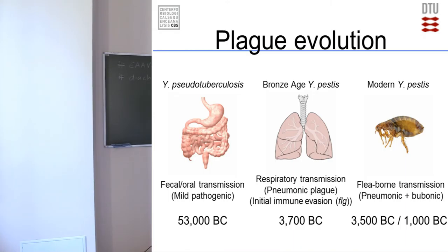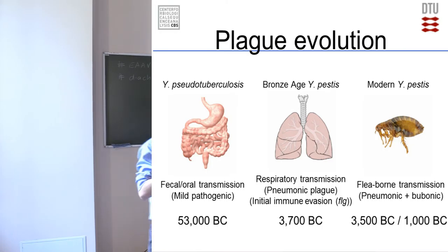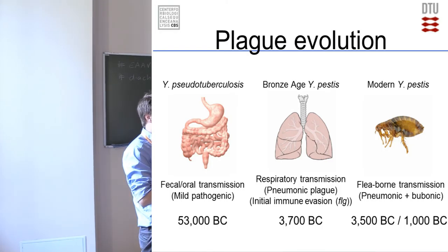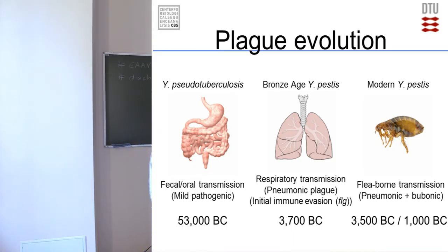Around 3,500 years ago, strains appear that actually contain the YMT gene, meaning plague starts to build up the capability to be transmitted by fleas. Around 1,000 BC we have the first strains that are both fully capable of flea transmission and fully capable of causing bubonic plague.